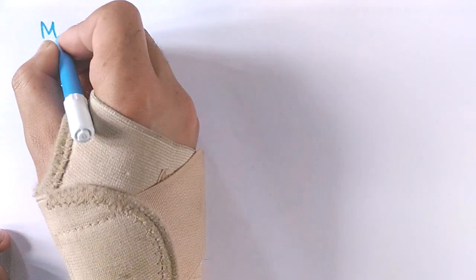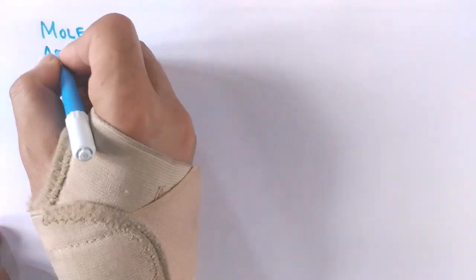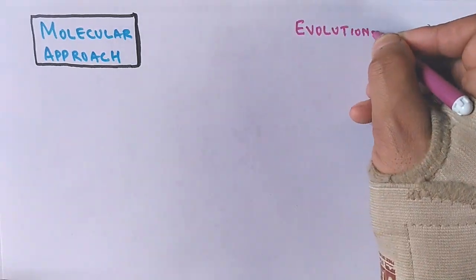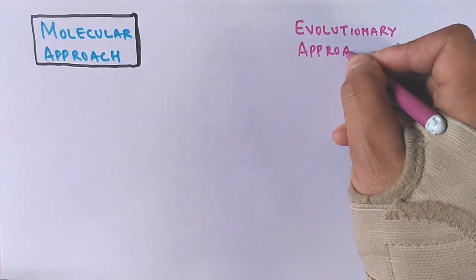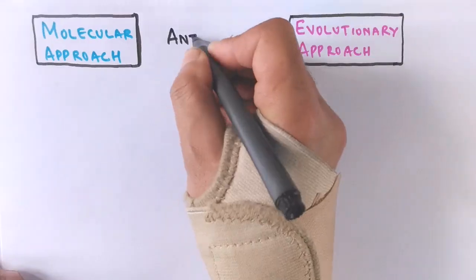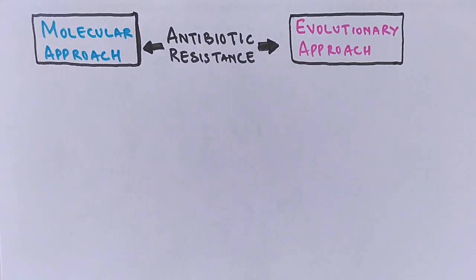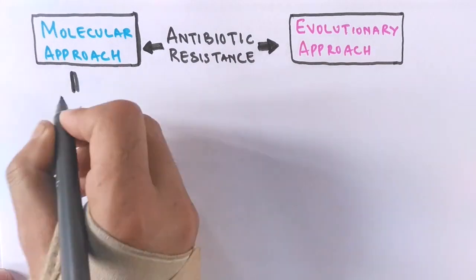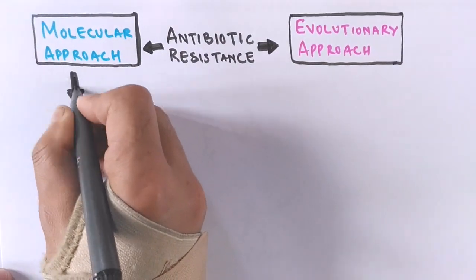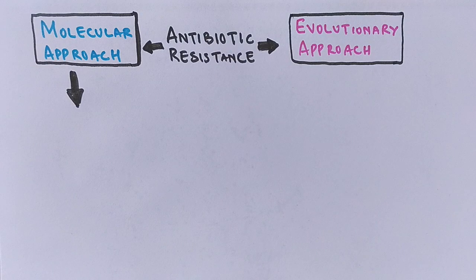For antibiotic resistance to occur, we have two approaches: the molecular approach and the evolutionary approach. In both cases, antibiotic resistance occurs through overuse of drugs or by increasing the concentration of drugs, and both conditions lead to antibiotic resistance.